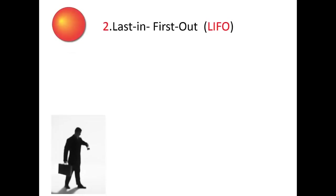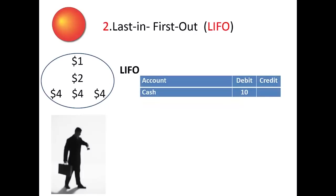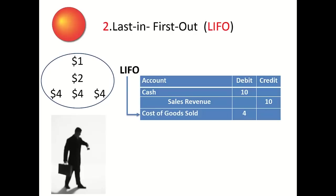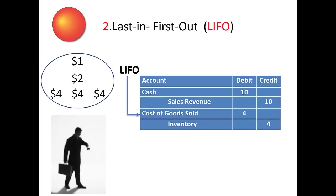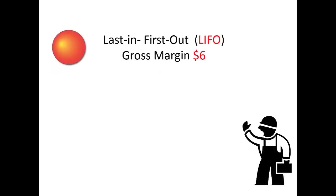Under LIFO — last in, first out — management assigns the unit cost of the last unit purchased in to become the unit cost of the first goods sold out. On the sales side, it's a debit to cash of $10 and a credit to sales revenue of $10. On the expense side, we debit cost of goods sold for $4, increasing that expense, and credit inventory $4, decreasing the inventory. LIFO's gross margin turns out to be $6.